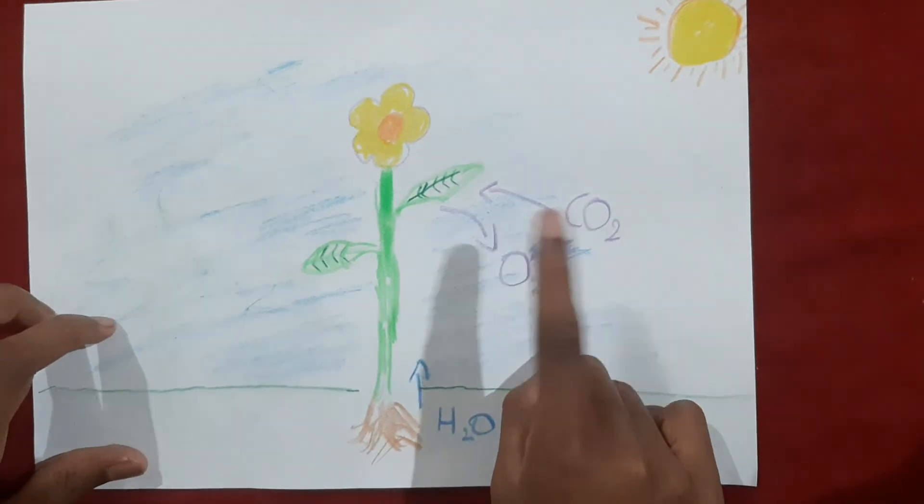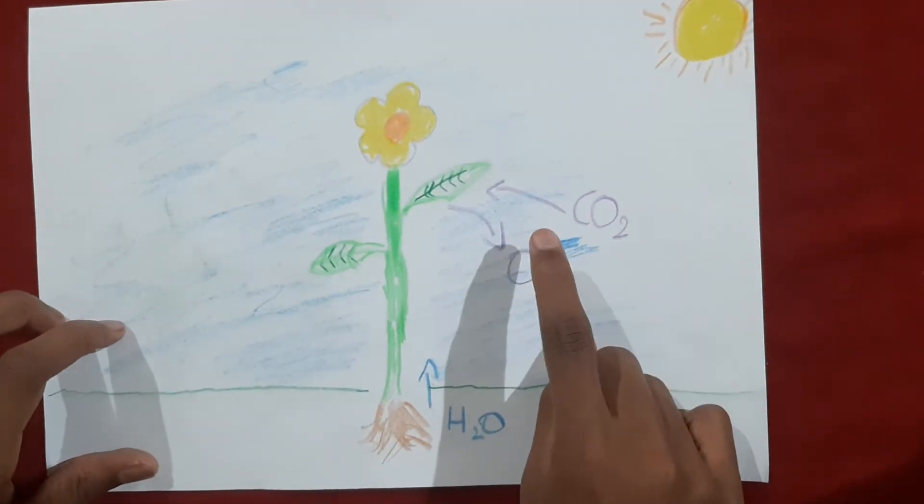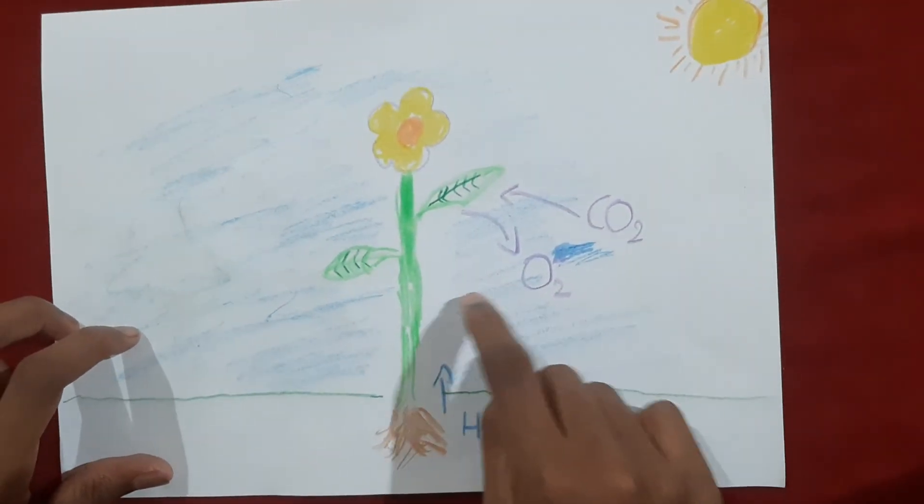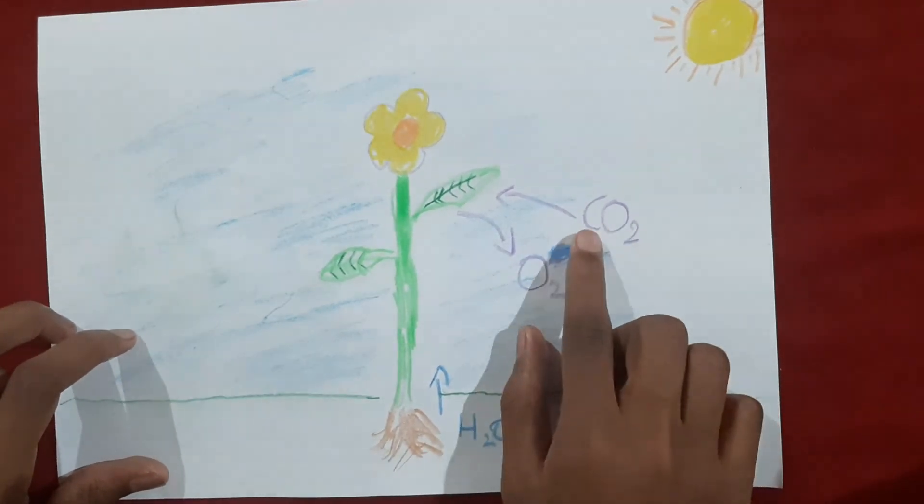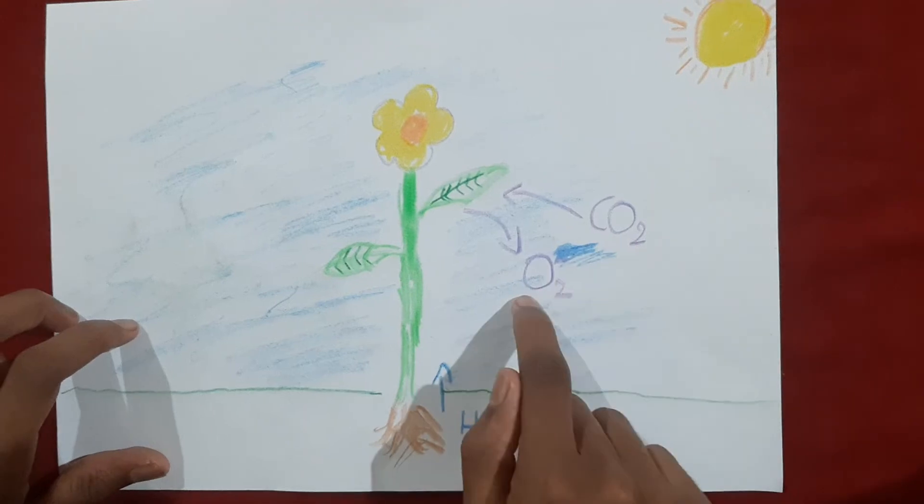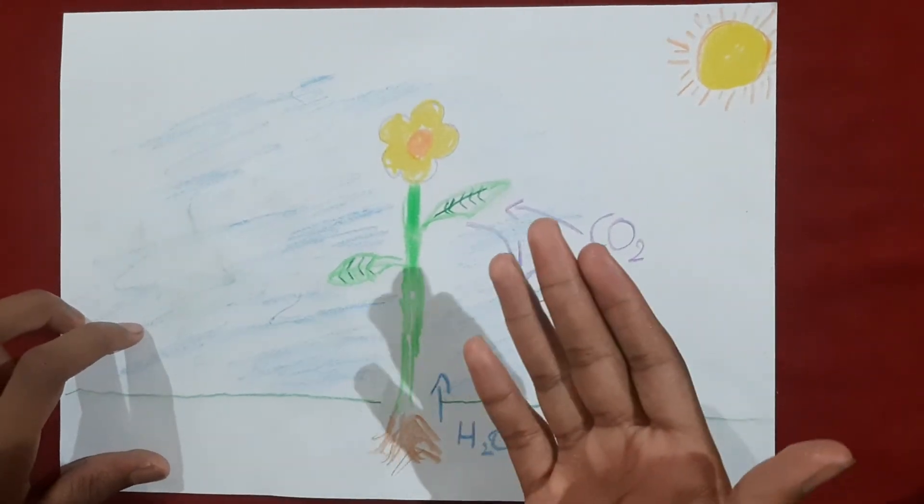cycle again. This is photosynthesis, and this is how a plant uses carbon dioxide to make oxygen and food for itself. So there you have it, the method of how a plant creates its own